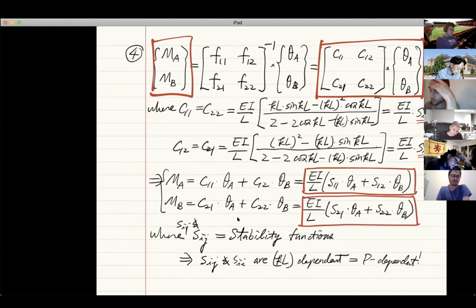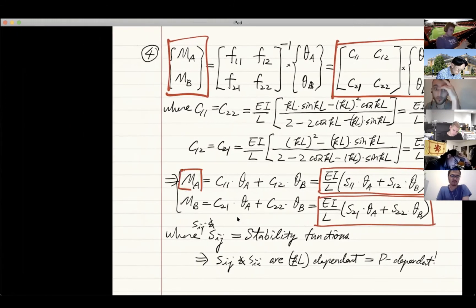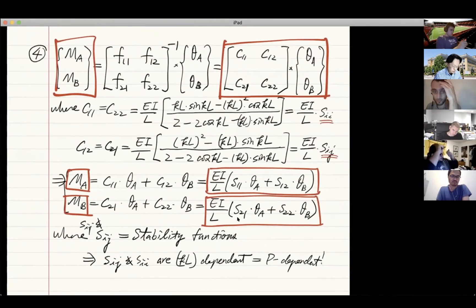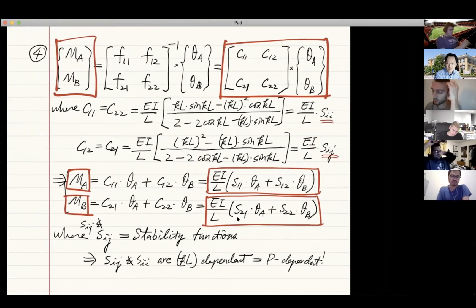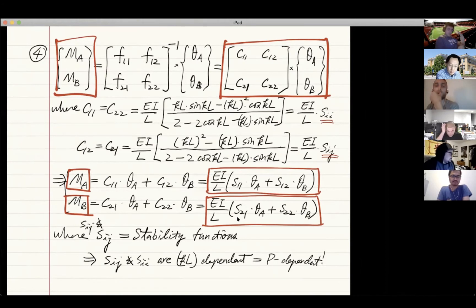In the slope deflection method, we will use the coefficients that you can either calculate from a computer or you can look it up from a table. You use the value of s11, s12, s21, s22 to either determine the moments MA and MB or use it to determine the angles theta A and theta B.